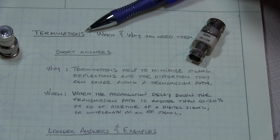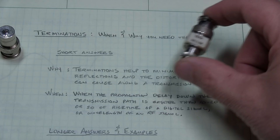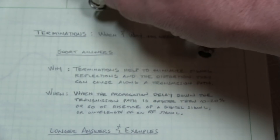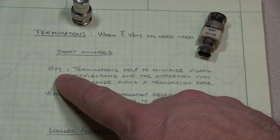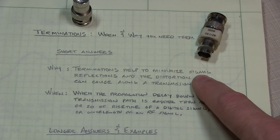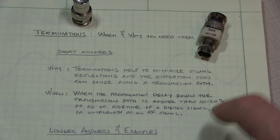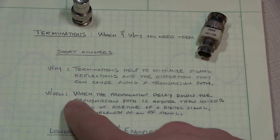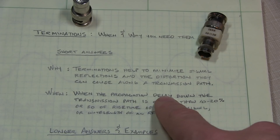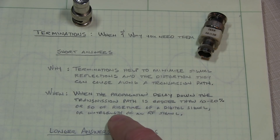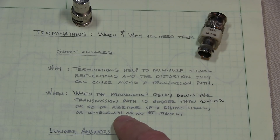In this video, we're going to address terminations — when and why you need them. You've seen me use little through terminators, or an end line terminator, or even a 50 ohm termination built into the input of a scope. The short answer is that terminations help to minimize signal reflections and the distortion that can occur along the transmission path. You'd use them typically when the propagation delay becomes a significant portion of the rise time or wavelength of an RF signal — typically greater than 10 or 20%.